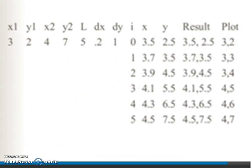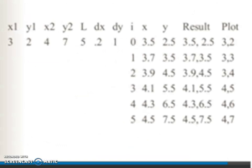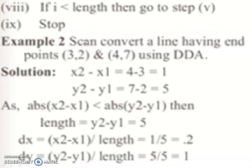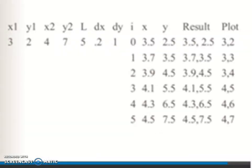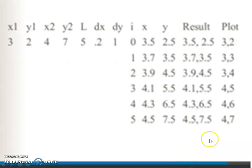For plotting, we have x1,y1 as 3,2 and x2,y2 as 4,7. Length is 5. dx and dy are 0.2 and 1. i ranges from 0 to 5. x1 + 0.5 gives us 3.5. y1 + 0.5 is 2 + 0.5 = 2.5. Result is 3.5, 2.5. After truncation, we have the coordinates as 3,2.